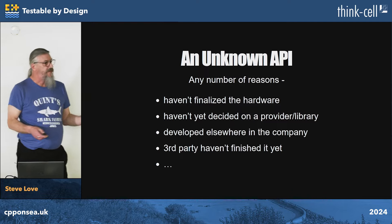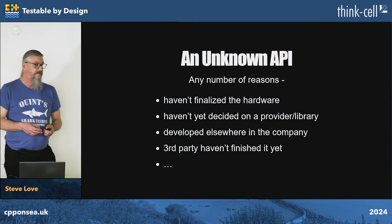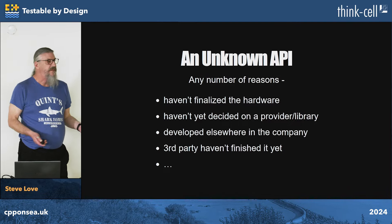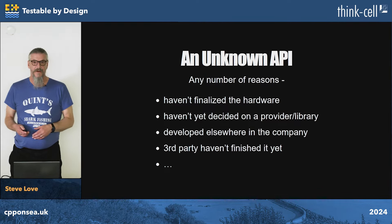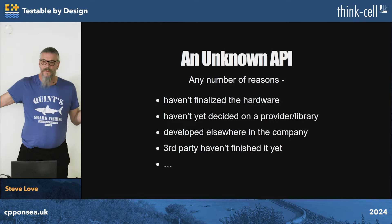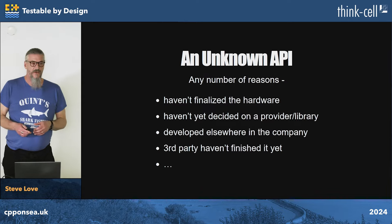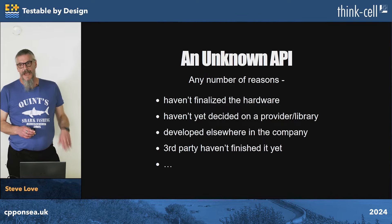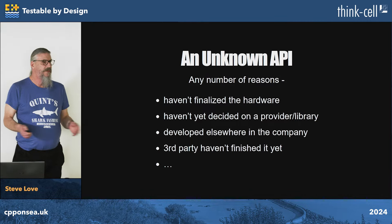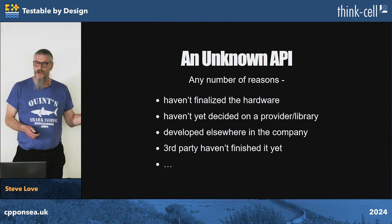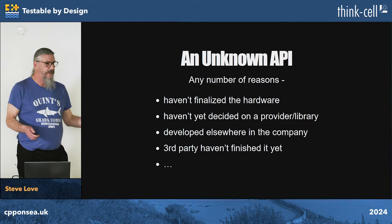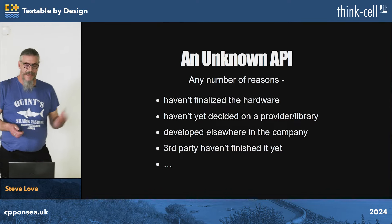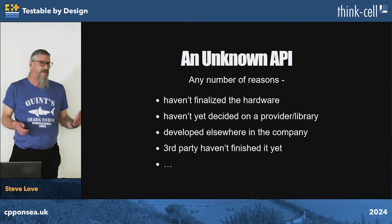In terms of the third-party APIs, these might be unknowns for a variety of reasons: the hardware isn't finished yet, it doesn't even exist, you haven't decided on who you're going to use for the third-party APIs, they're being developed somewhere else in the company or haven't finished yet. This kind of uncertainty is often seen as an impediment — a blocker — because we don't know what the system looks like, how it's going to work, what its actual API is going to be. It might also inhibit TDD because it makes it harder to see where to start.